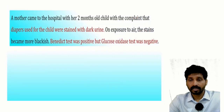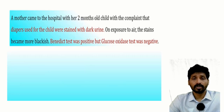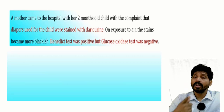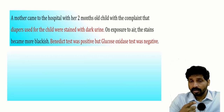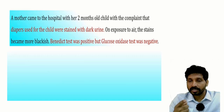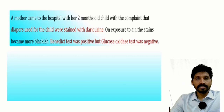Another similar case: a mother came to the hospital with her two-month-old infant, complaining that the diapers used for the child showed dark stains that become more blackish on exposure to air. The Benedict test is positive but the glucose oxidase test is negative. If the baby were diabetic, both tests would be positive. Here, the blackening of diapers indicates the presence of homogentisic acid, which is strongly reducing in nature. That is all about alkaptonuria — hope you understood. Thanks for listening.